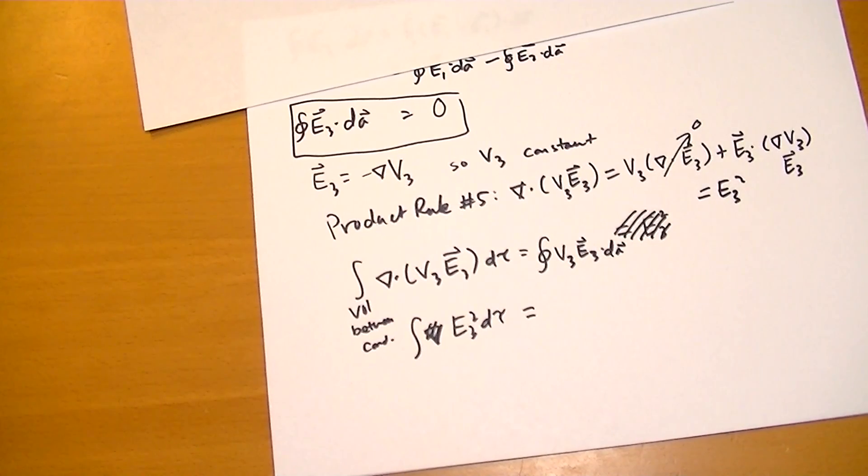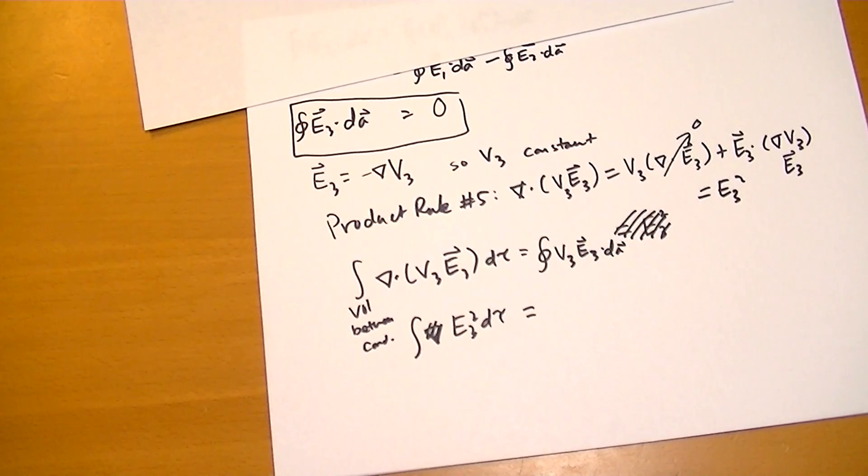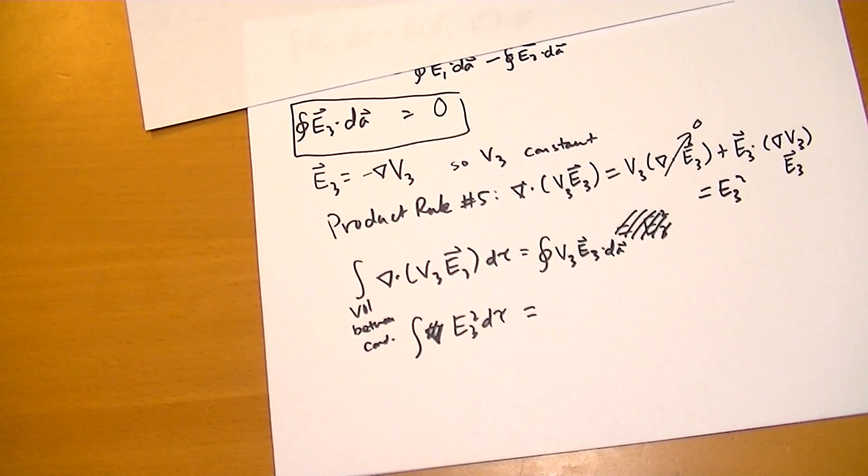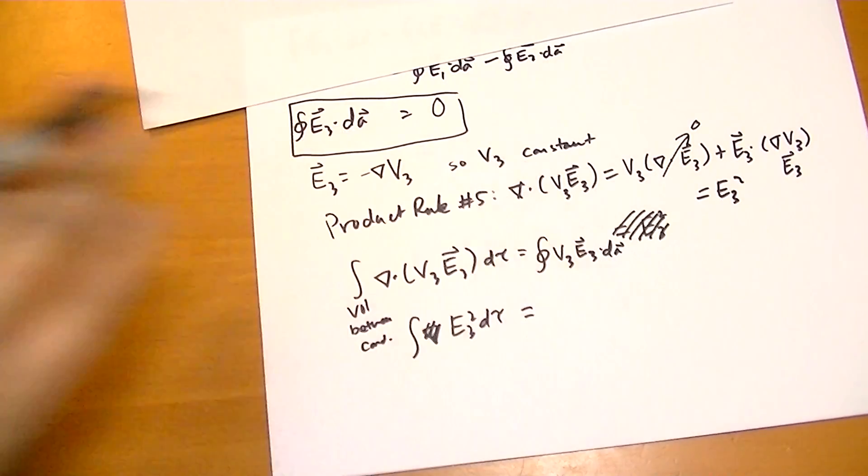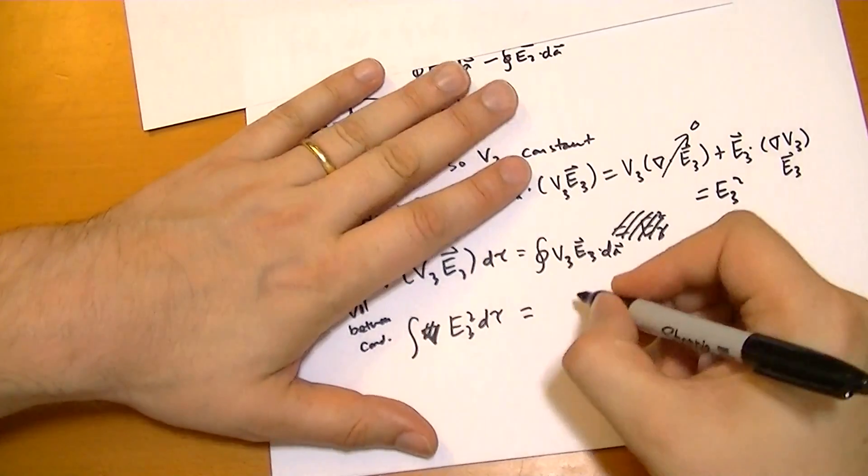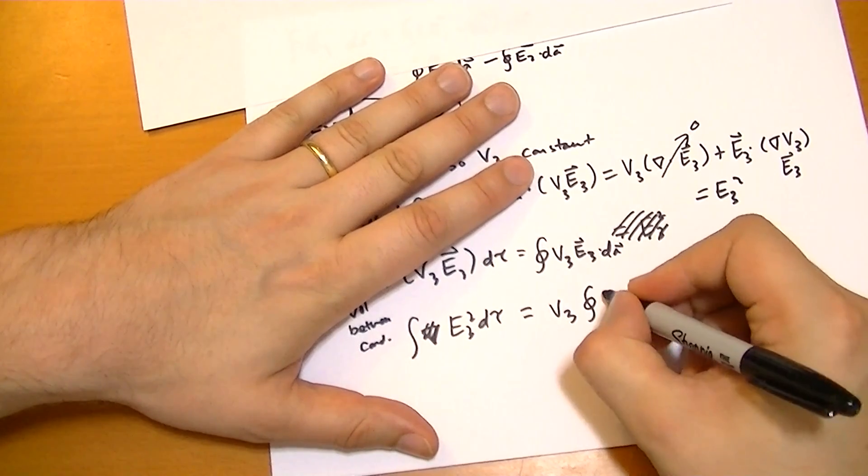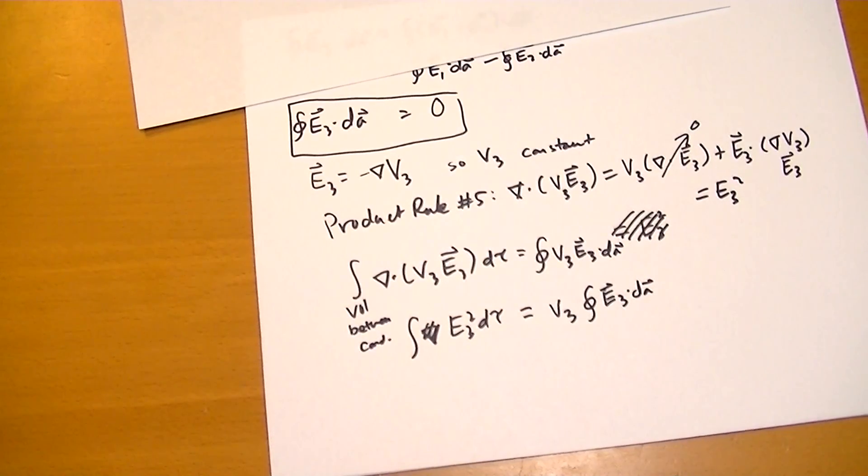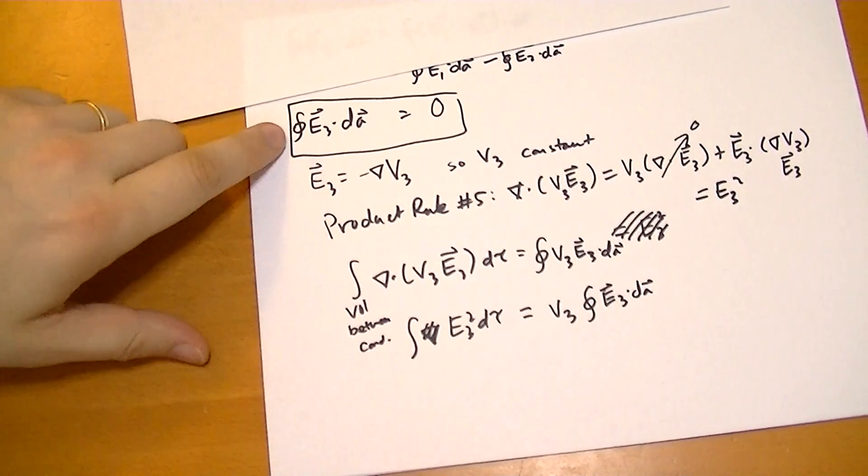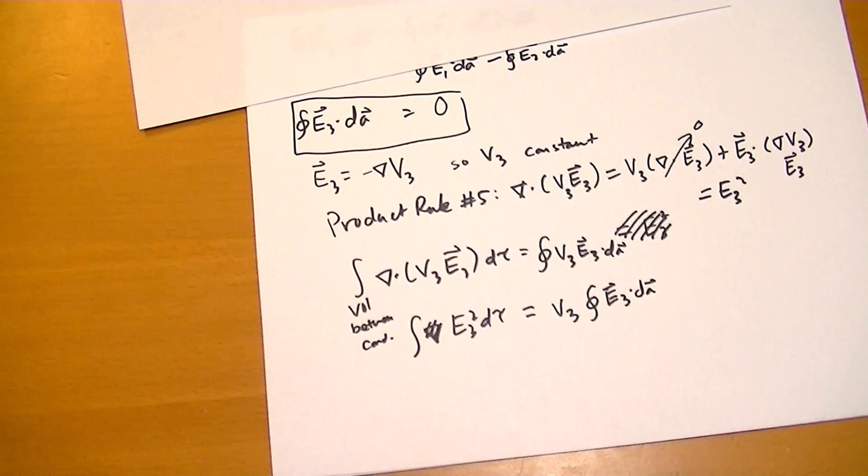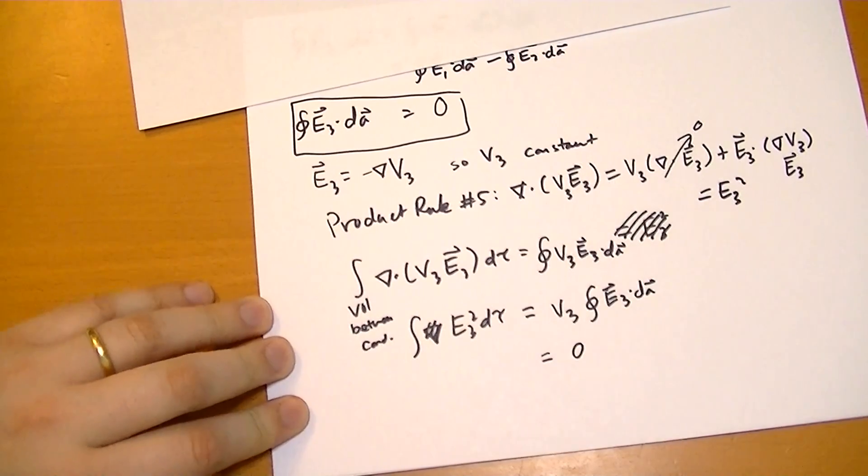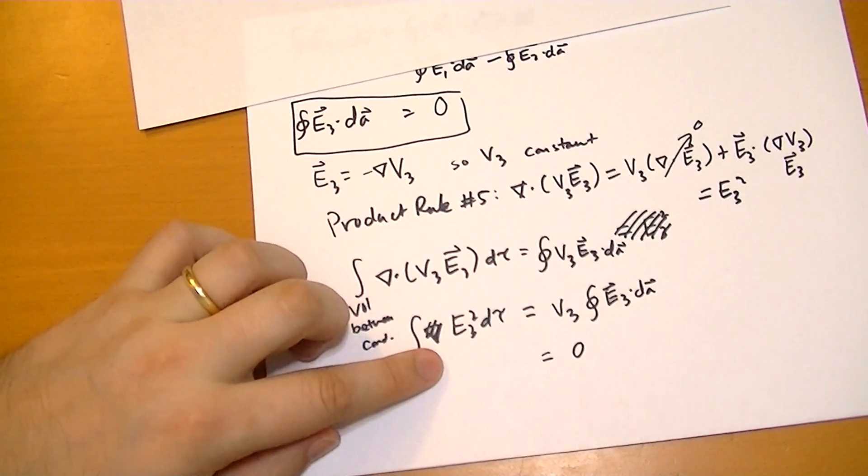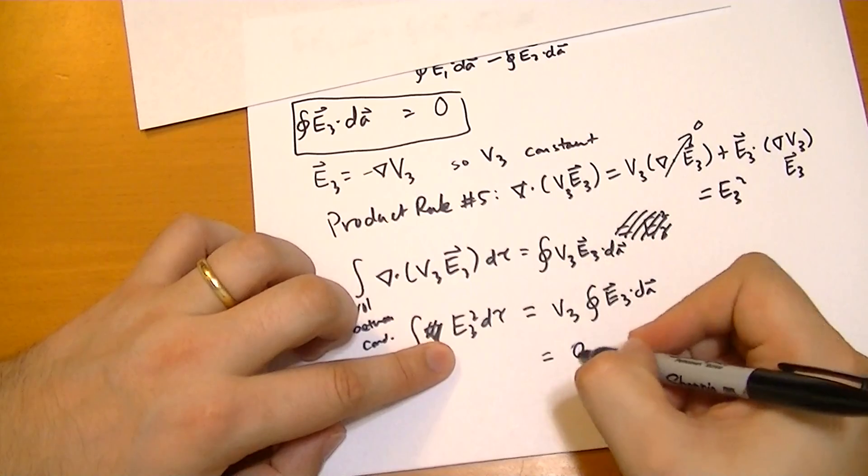So what's interesting is that we can now note that for each of the surfaces, the potential is constant. So the surface integral, we can pull out that V3. And we've also calculated earlier that the integral E3 dot dA is equal to zero, so this is equal to zero. So we've just proved that this integral, E3 squared d tau, is equal to zero.